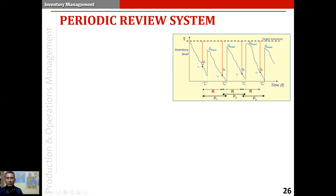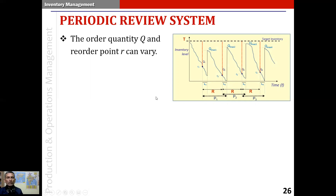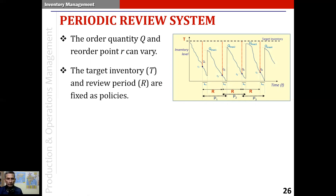Because of this, the reorder points vary from order cycle to order cycle, and so do the order quantities. Along with them, the lead time to replenishment also varies from one order cycle to the next. Putting it all together: the order quantity and reorder point can vary in the periodic review system, whereas the target inventory T and the review period R are fixed as policies.